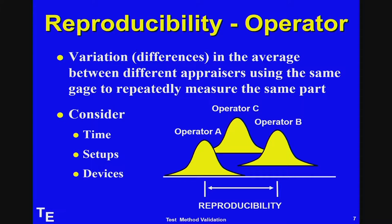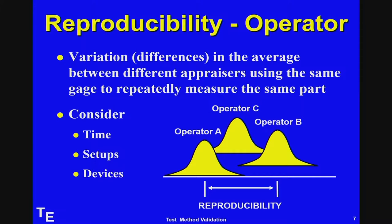When you read about gauge R&R studies, they often discuss reproducibility with respect to operators. But what if the instrument is fully automated and the operator just pushes a button? Then maybe reproducibility should be with respect to days, assays, or calibration — so reproducibility with respect to calibration curves, recalibrating on three different days, maybe with three different operators. Reproducibility should be defined relative to whatever makes the most sense for your measurement device.